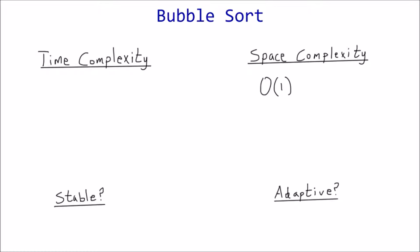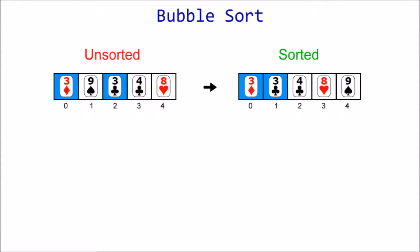Stability: a sorting algorithm is stable if the initial order of equal elements is preserved. Bubble sort is a stable algorithm because equal elements will never be swapped. We saw an example of this in the C++ demonstration. The three of diamonds was positioned before the three of clubs, both before and after the sort.